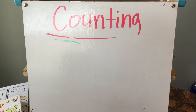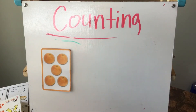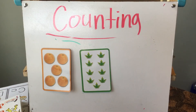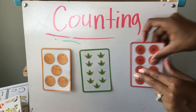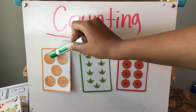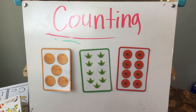Now we're going to put three objects up there. Here's the first one, here's the second one, and here is the third object. If I say which one shows nine, you would have to count each picture to see which picture shows nine.